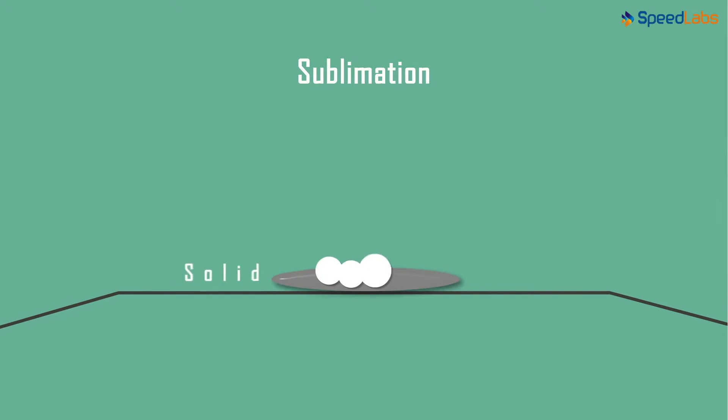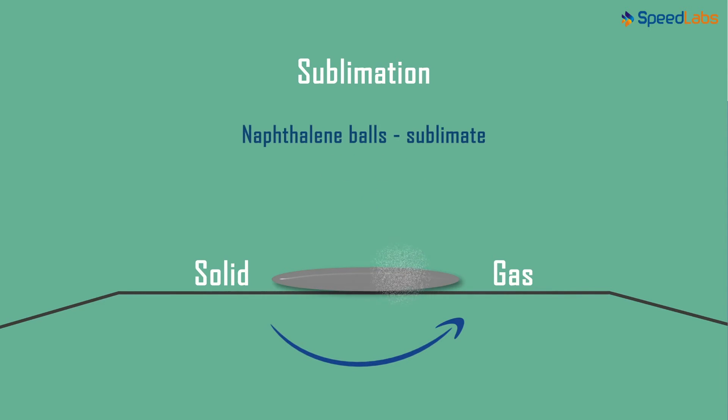For example, the naphthalene balls used in our houses disappear within a few days. We do not see them get converted into the liquid state. These naphthalene balls move directly from the solid state to the gaseous state. Therefore, we say that naphthalene balls sublimate.